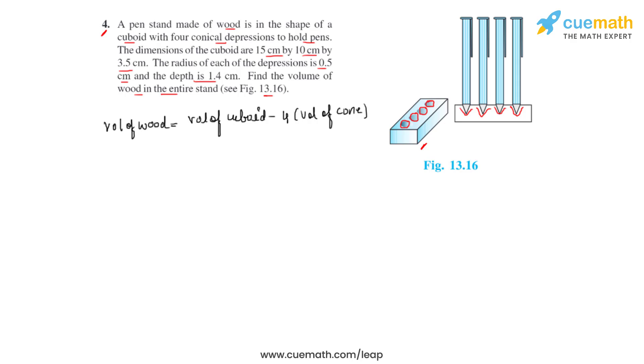So it's very easy to find the volume of the cuboid with the formula l times b times h, and the volume of a cone can be found with the formula 1/3 π r² h.